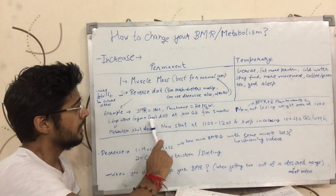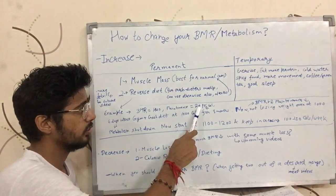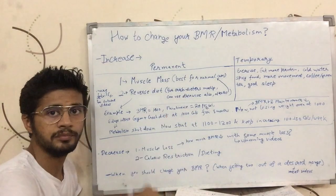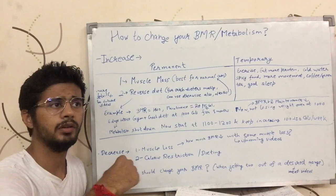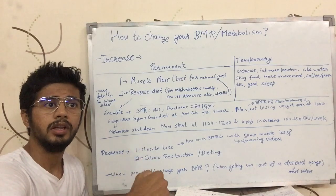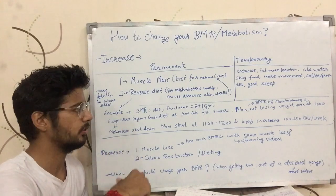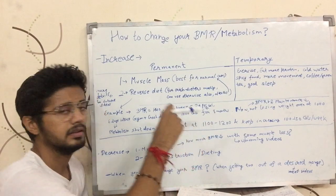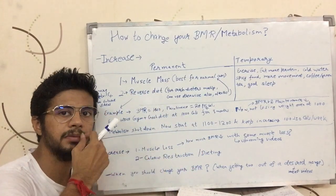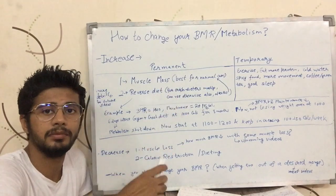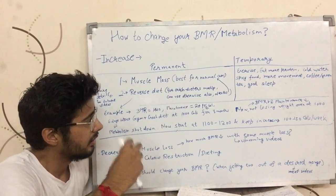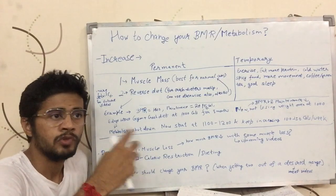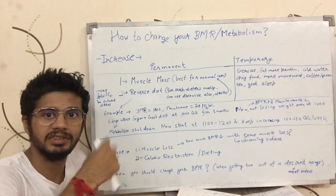Even with that maintenance, you can't eat enough food. So in order to take in food, maybe only 1,000 calories a day. Slowly the body reduces BMR, reduces maintenance calories, causes muscle loss, and adapts to live on just 1,000 calories — because that's all you are giving it.